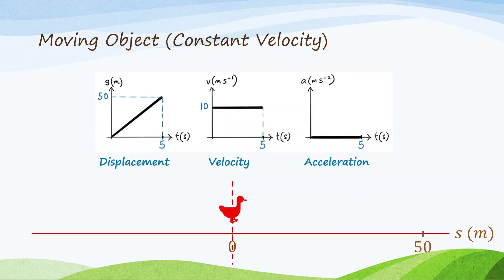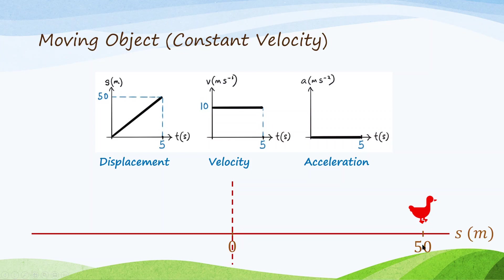Moving object with constant velocity. The duck is moving to the right at constant velocity. It moves from the origin to the 50-meter location. So, the displacement graph increases from 0 to 50 meters, and the gradient is constant. The gradient of displacement graph is actually the velocity, so velocity is constant. Velocity is 10 meters per second. Because the duck is moving at constant velocity, velocity is constant and horizontal — because there is no acceleration, no speeding up or slowing down. Acceleration is zero.